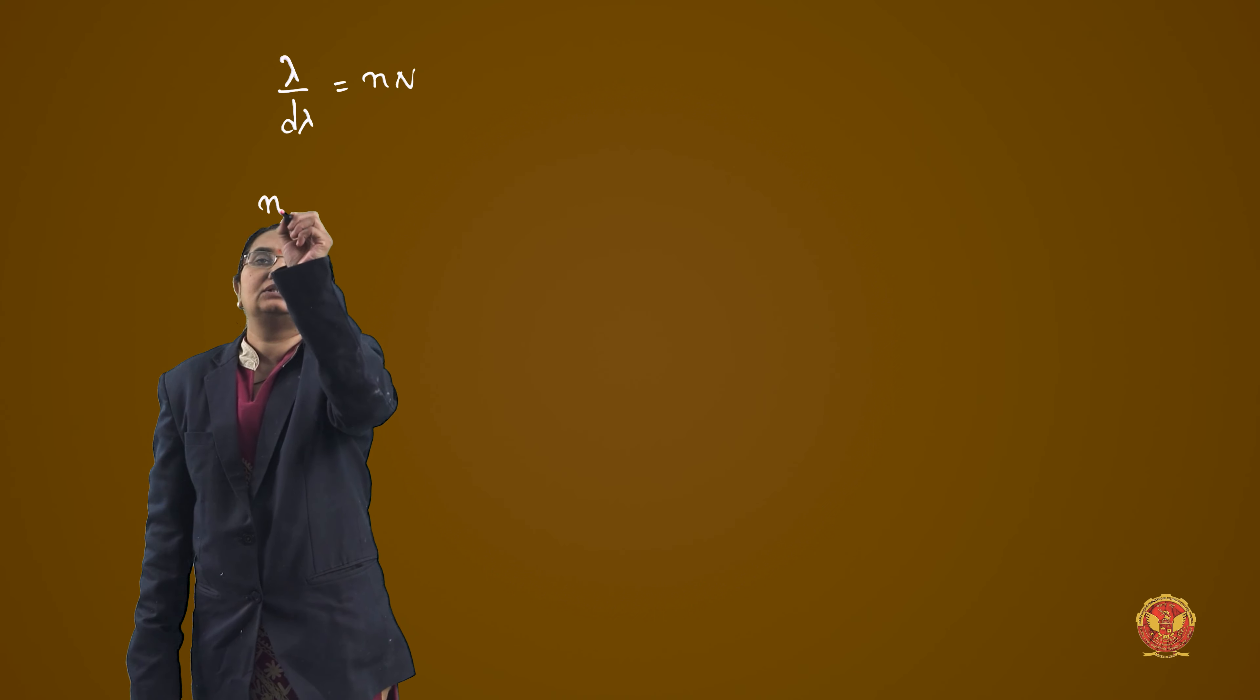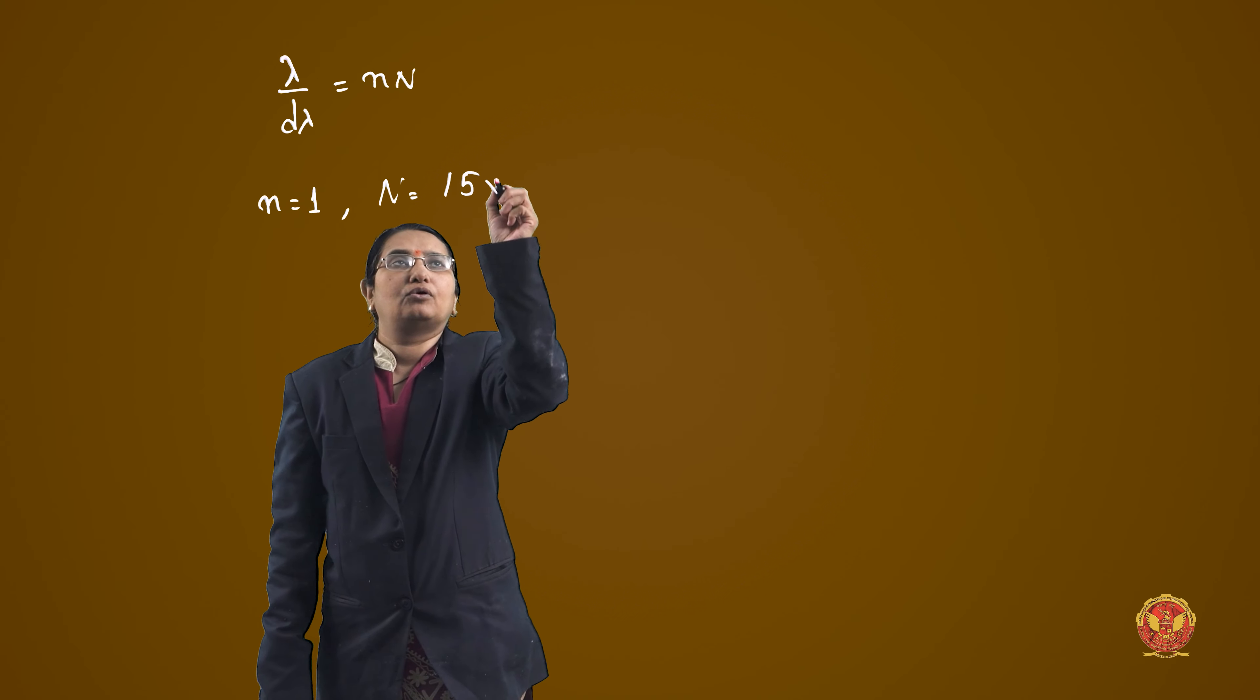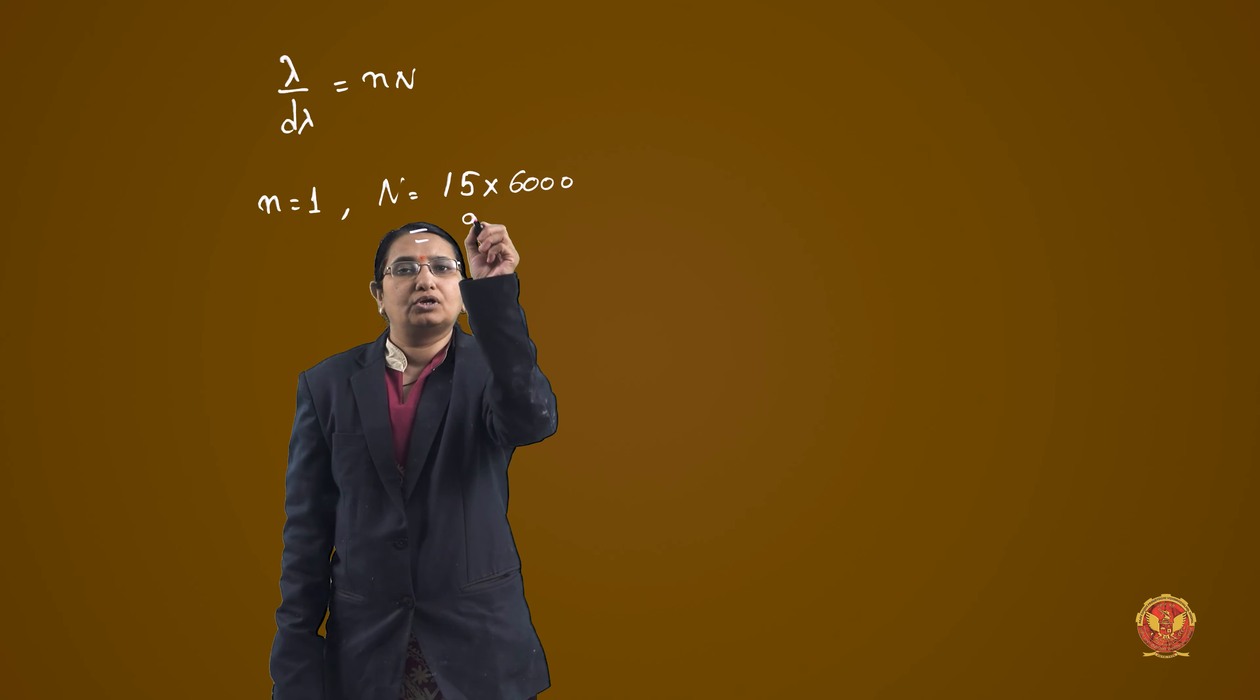So n is equal to 1, and capital N is what we have said. It means that the total number of lines is 15 into 6000.